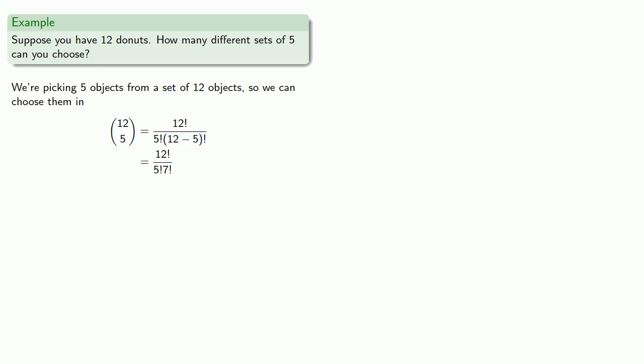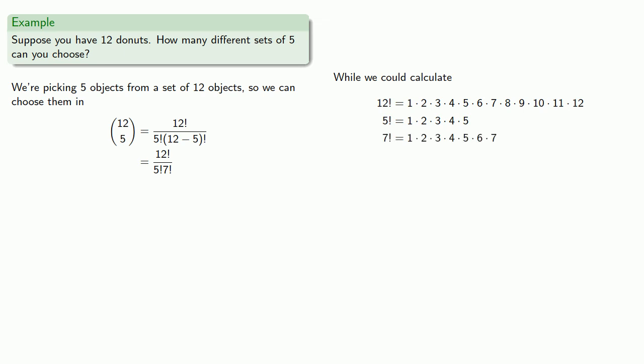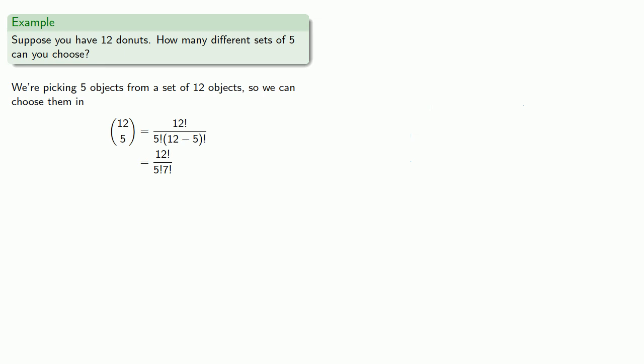The factorials indicate the products of the whole numbers from 1 up to n. We could calculate 12 factorial as 1 times 2 times 3 all the way up to 12. 5 factorial is the product 1 times 2 all the way up to 5. And 7 factorial is this product. Let's take advantage of the fact that most of these factors are the same, and we're working with a fraction, so many of them will factor out. Paper is cheap. Let's at least write it down. 12 factorial, 5 factorial, and 7 factorial.